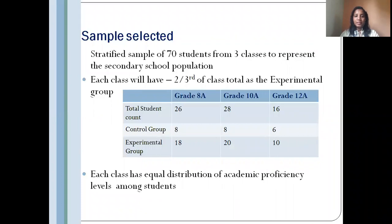The sample that I selected for my research includes a stratified sample of 70 students from three different classes: grade 8, grade 10, and grade 12, each with equal distribution of academic proficiency levels. Two-thirds of the class total will be considered as the experimental group where they will be provided with the interval and consume food within that time period, along with the control group where they will receive the interval but will not be given the time to consume food.